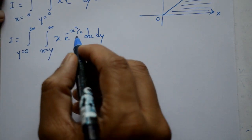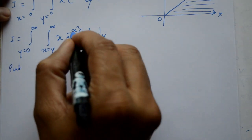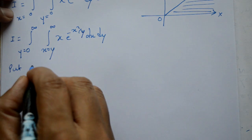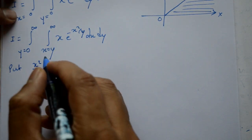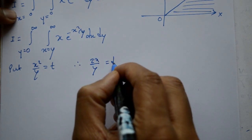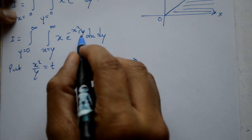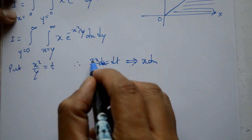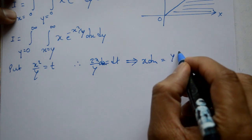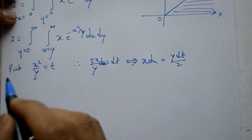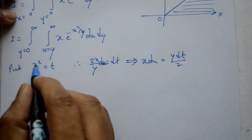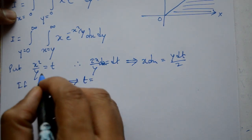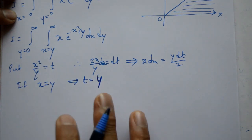Is part ko directly evaluate nahi kar sakte. Kya karna hai: put x square by y = t. Differentiate kiya to 2x by y = dt, so x dx = y dt by 2. Limits bhi change ho jaayengi. If x = y, then t = y square by y = y.